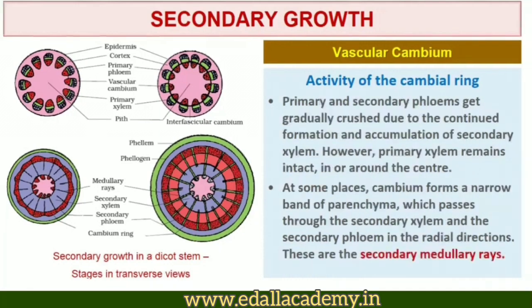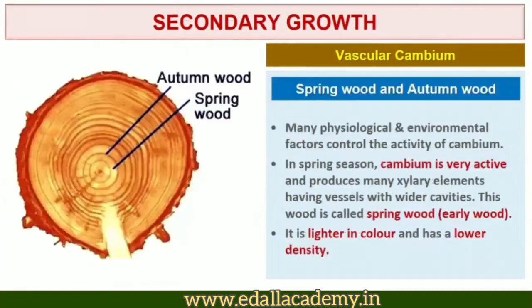Secondary xylem soon forms a compact mass. The primary and secondary phloems get gradually crushed due to the continued formation and accumulation of secondary xylem. The primary xylem, however, remains more or less intact in or around the center. At some places, the cambium forms a narrow band of parenchyma which passes through the secondary xylem and secondary phloem in the radial direction — these are the secondary medullary rays.